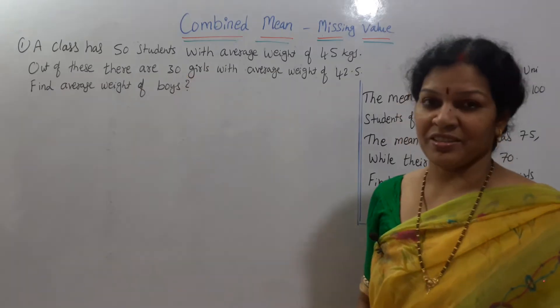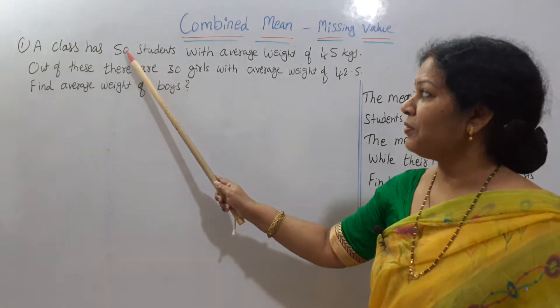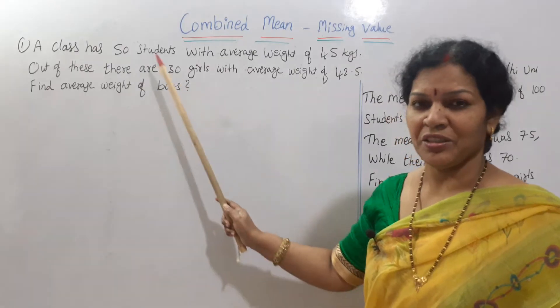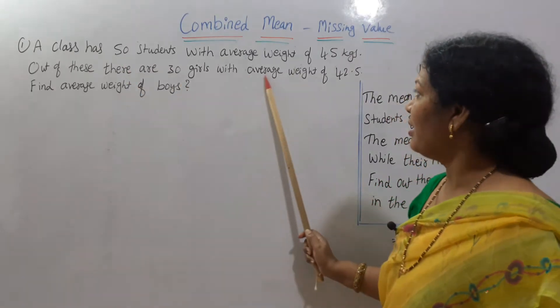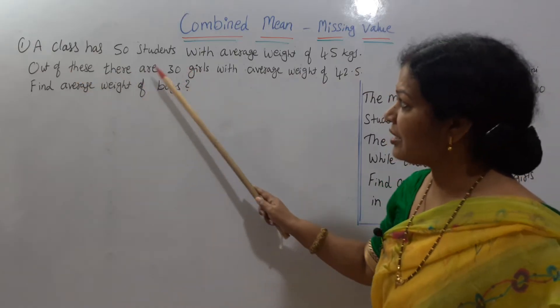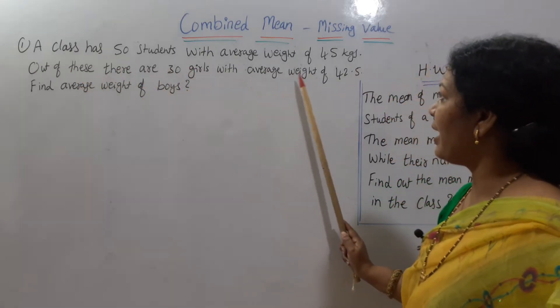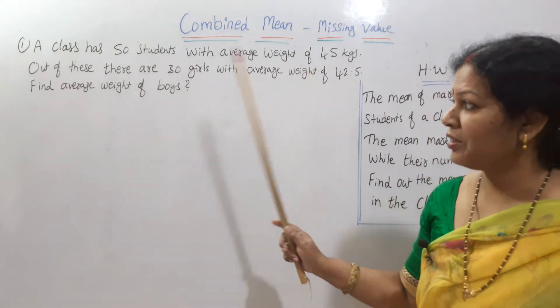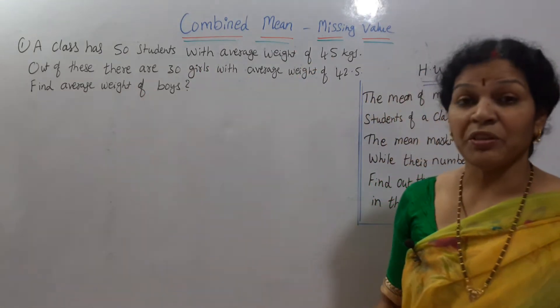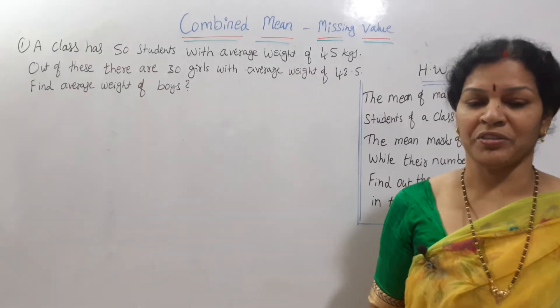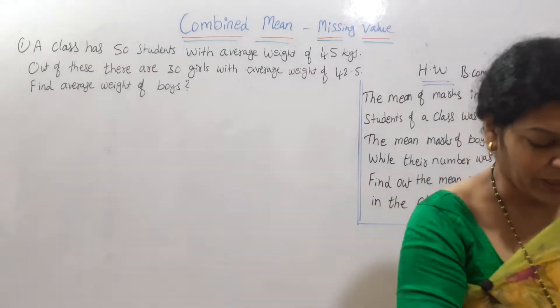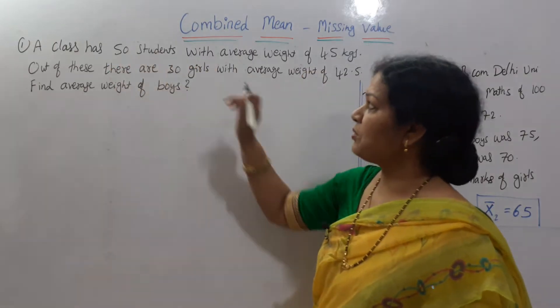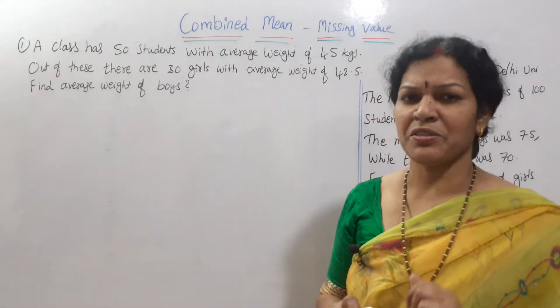Out of these, there are 30 girls. Out of 50, 30 girls. It means how many boys are there? 20. 50 minus 30. Out of these, there are 30 girls with average weight of 42.5. Girls average weight is given. Find average weight of boys. How to find out boys weight? First of all, we will write the values first.